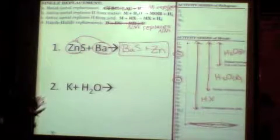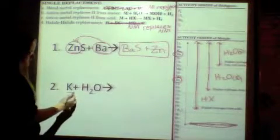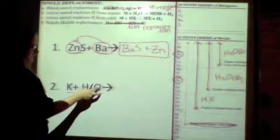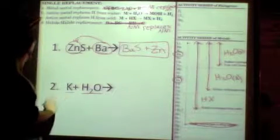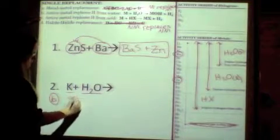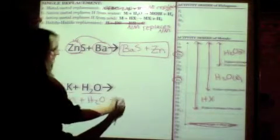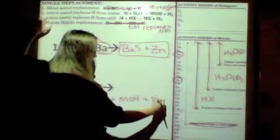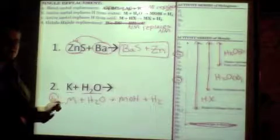Number two. You have K plus H2O. So again, look at your guidelines. You have a single element and a compound. In this case, our compound contains hydrogen. So that means it's either going to be B or C. In this case, it's going to be B because it's H2O. So this means we're going to get M plus H2O is going to produce MOH plus H2. So that's step one. We found the general reaction. Step two.